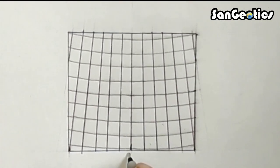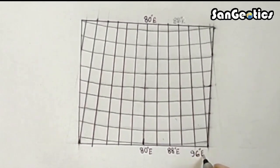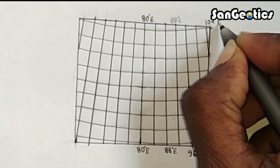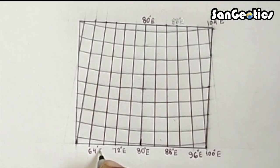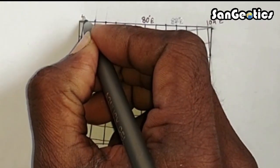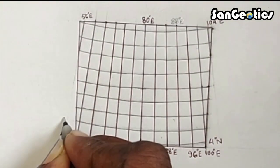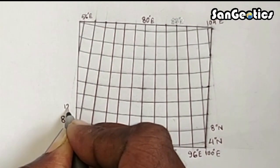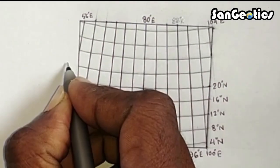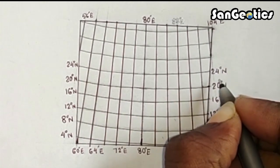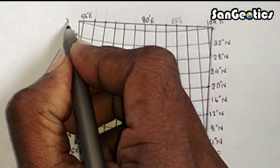Label the meridians as 80°E, 88°E, 96°E, 100°E, 104°E on the right-hand side, and 72°E, 64°E, 60°E, and 56°E on the left-hand side. Label the latitudes as 4°N, 8°N, 12°N, 16°N, 20°N, 24°N, 28°N, 32°N, and 36°N.